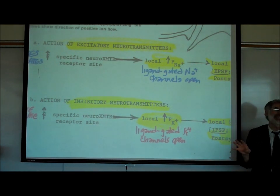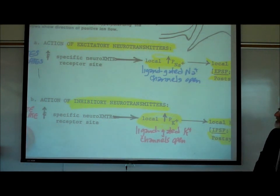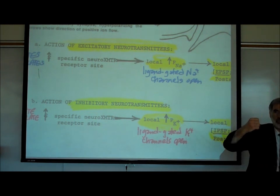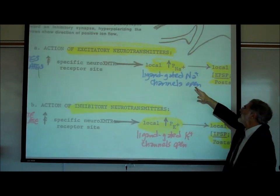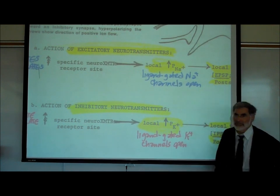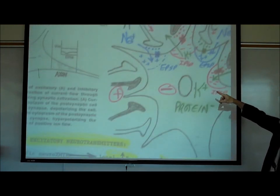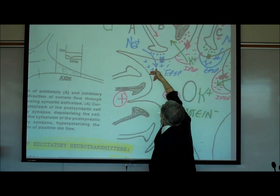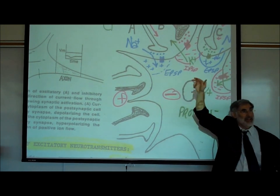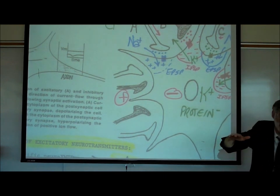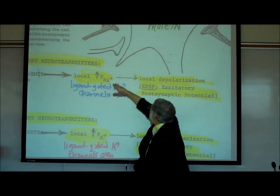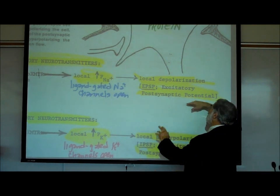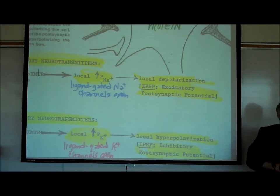A ligand-gated ion channel is one opened by a ligand — a neurotransmitter or hormone — as opposed to a voltage-gated channel. As positive charged sodium ions flow into the cell, the cell becomes less negative. The term we use when a cell becomes less negative is depolarized. As the sodiums flow in, it causes a local depolarization. This local depolarization is also called an EPSP — an excitatory postsynaptic potential.